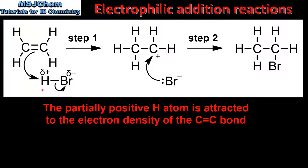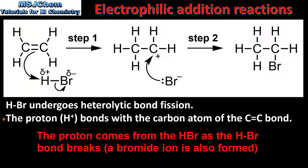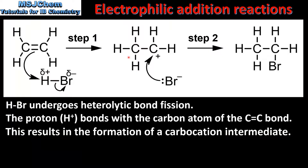Hydrogen bromide is a polar molecule. This is caused by the difference in electronegativity between bromine and hydrogen. Because of this difference in electronegativity, bromine has a partial negative charge and hydrogen has a partial positive charge. The hydrogen-to-bromine bond undergoes heterolytic bond fission. This is shown by the curly arrow which shows the movement of the pair of electrons from the bond towards the bromine atom. The proton bonds with the carbon atom of the carbon-to-carbon double bond, shown by this curly arrow which represents the movement of a pair of electrons from the pi bond of the double bond to this hydrogen atom. When the proton bonds to this carbon atom, we have the formation of a carbocation intermediate.